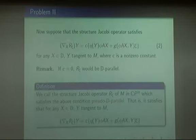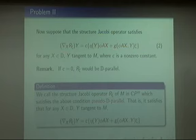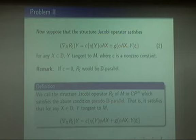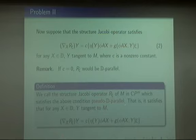The other problem is: the structure Jacobi operator satisfying this condition, where X belongs only to the maximal holomorphic distribution D. Here, if C is also vanishing, then this equation becomes the D-parallel structure Jacobi operator. Also this equation has the meaning of generalizing the parallel structure Jacobi operator. Thus we can define the pseudo-D-parallel structure Jacobi operator.